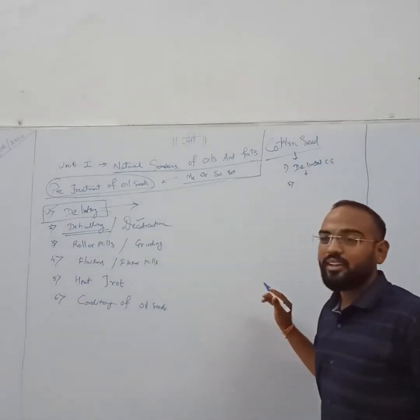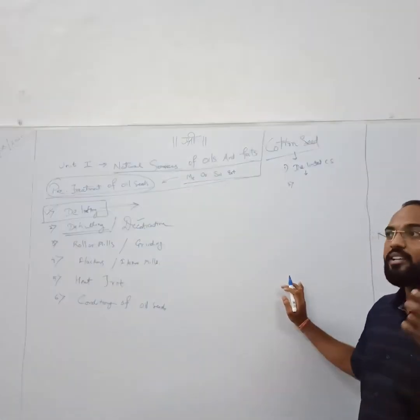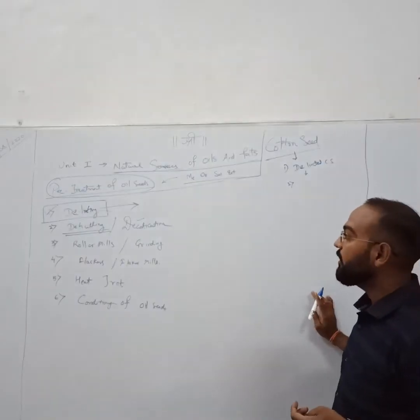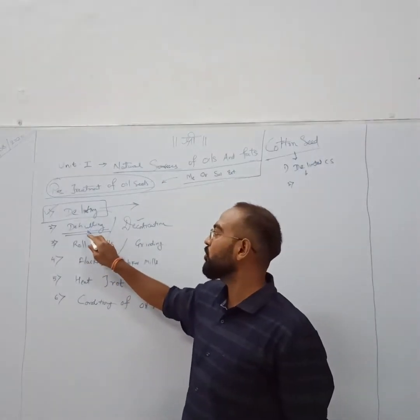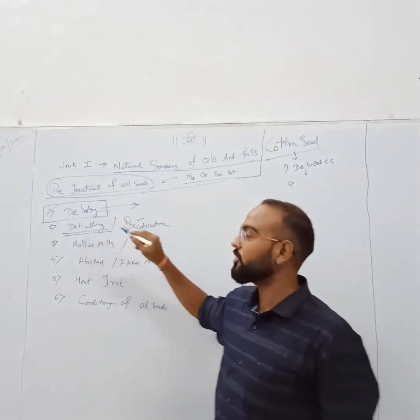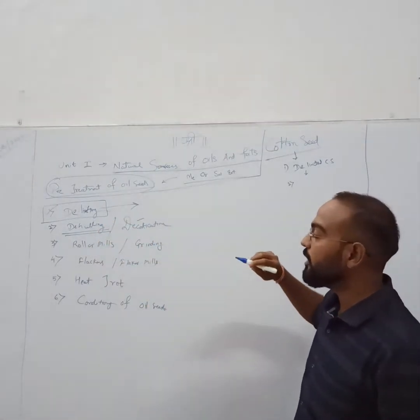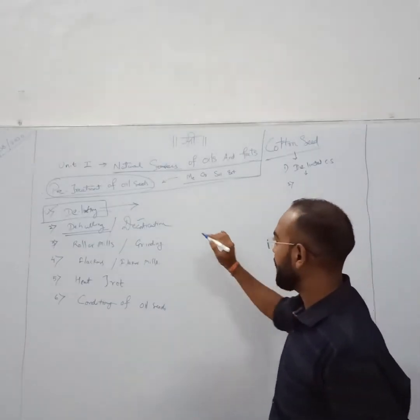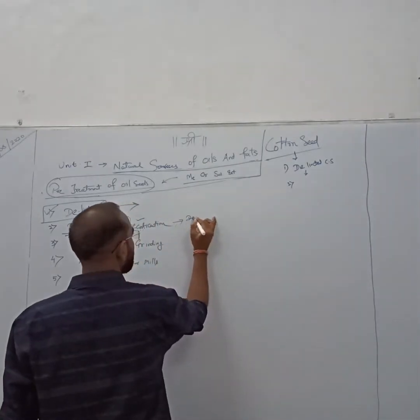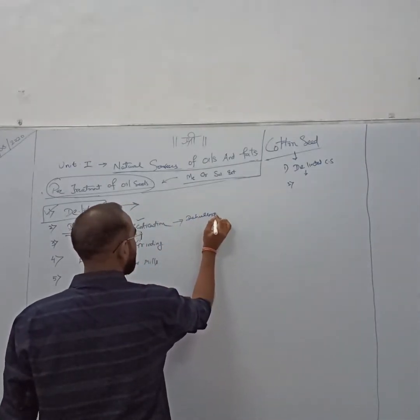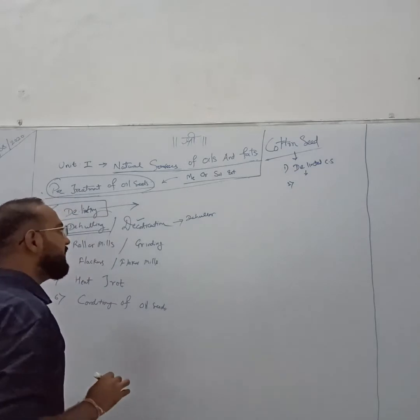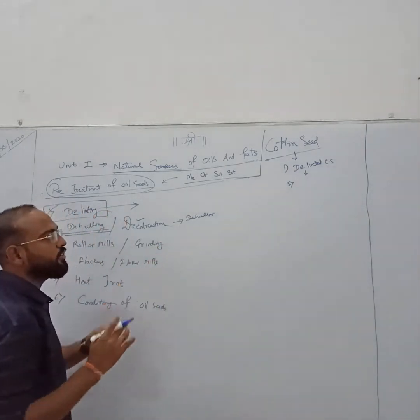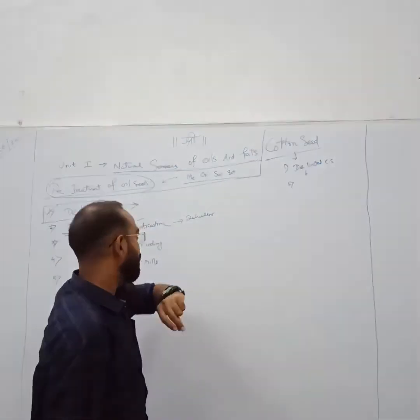Oil is present in oil cells inside the seed in the form of emulsion, and there is no need of hull. There is no oil present in the hulls. So we need to remove for purification. Hulls will be removed in de-hulling operation. It is sent for the de-huller. In de-huller the outer surface of our delinted cotton seed gets removed.